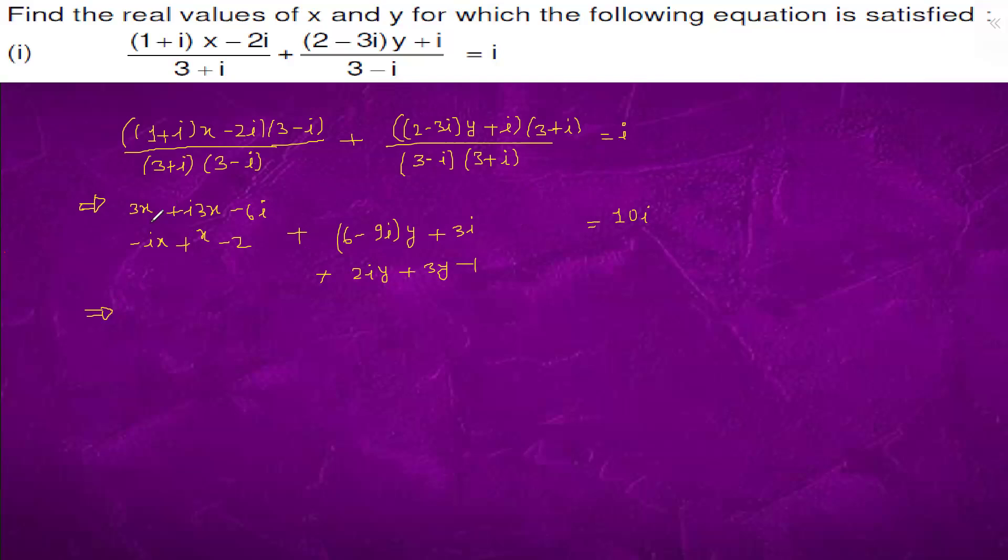We will take terms which are independent of iota on one side. This becomes 3x plus 3y minus 1. So we have 2x minus 6.